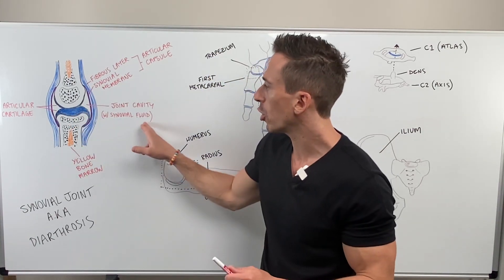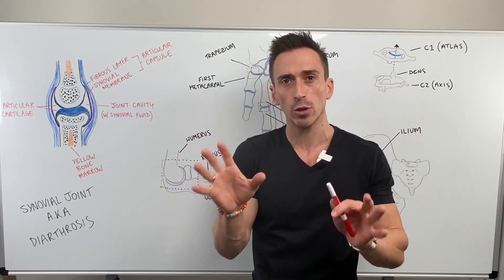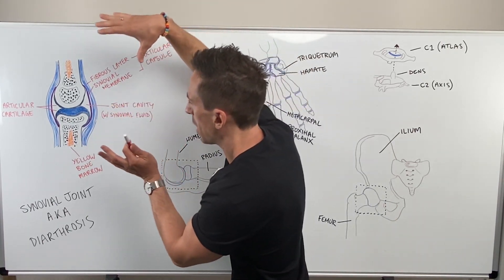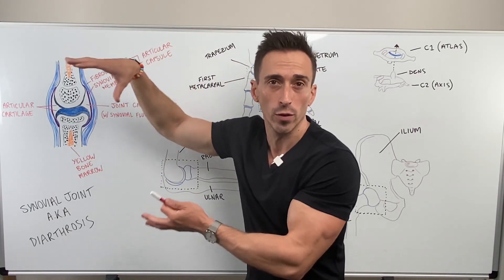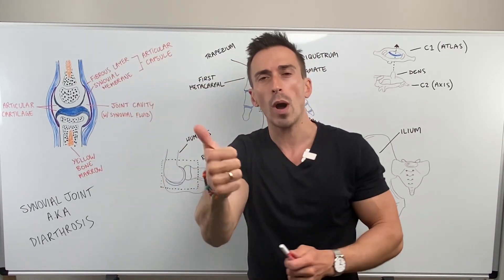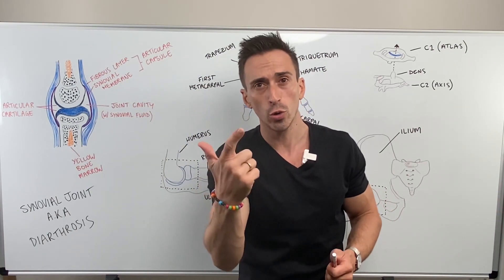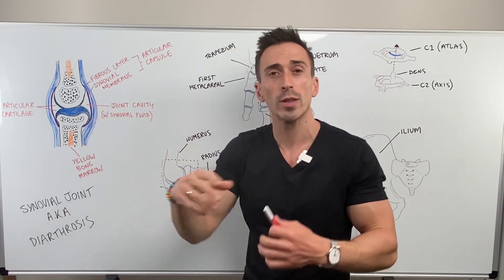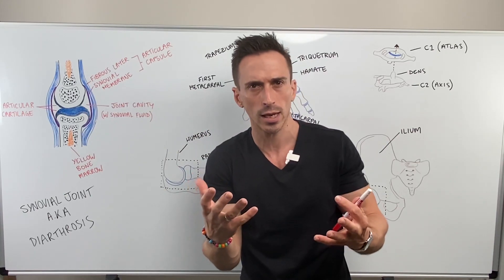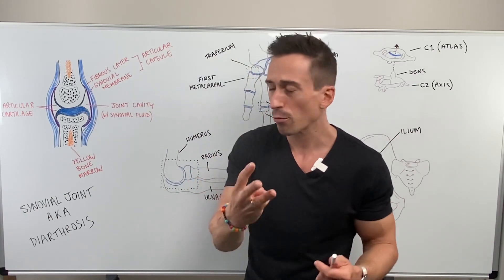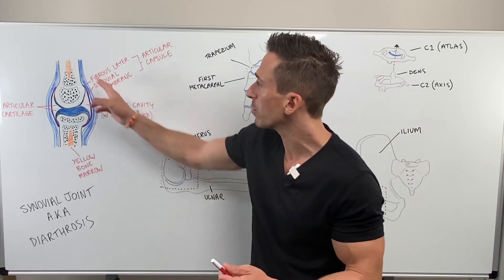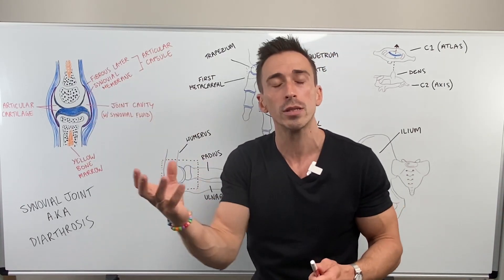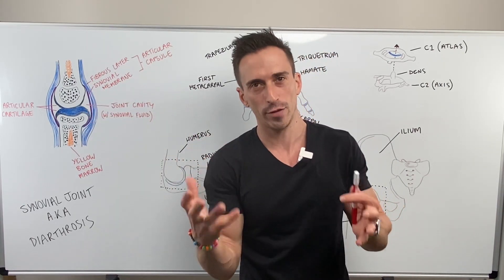That's what the synovial fluid does in the joint capsule. So as you can see, that's a generalized view of a synovial joint. One, they're freely movable. Two, they have articulating surfaces with articulating cartilage, which is hyaline cartilage. Three, they have a capsule which has a fibrous layer and a synovial membrane that produces synovial fluid.